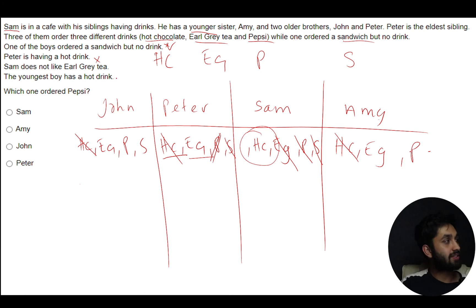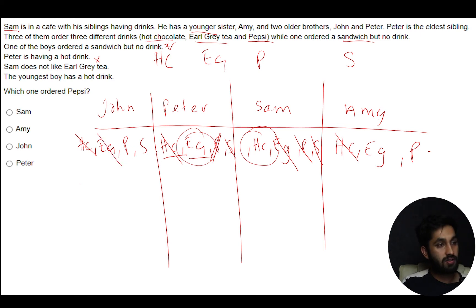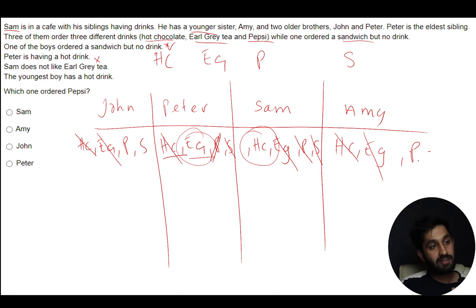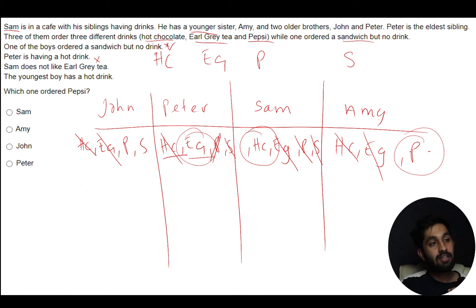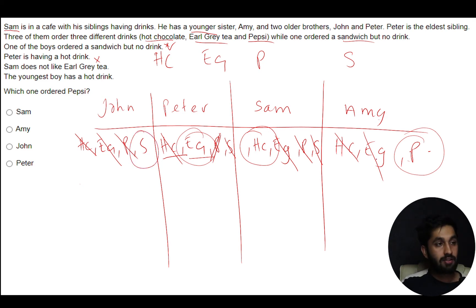Now, with HC crossed off for Peter, he's only left with Earl Grey — so Peter is having Earl Grey. We can now cross out EG from John and Amy. Amy is left with only Pepsi, which answers the question. If we continue, John is left with the sandwich. So: Sam = hot chocolate, Peter = Earl Grey, Amy = Pepsi, John = sandwich. The answer is Amy — she ordered Pepsi.